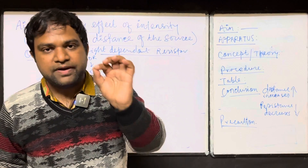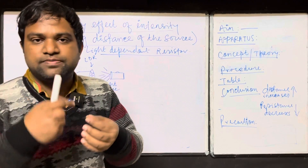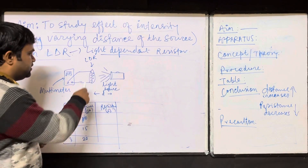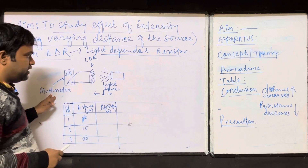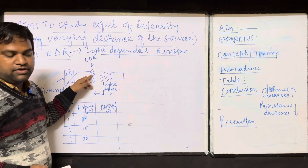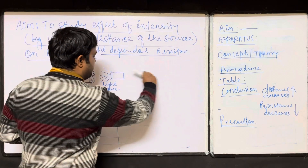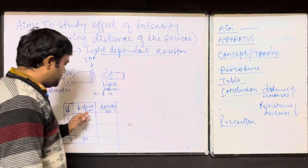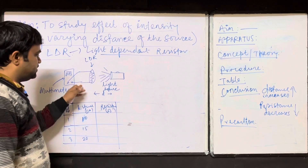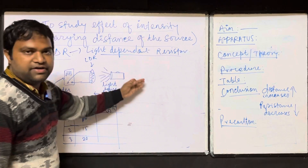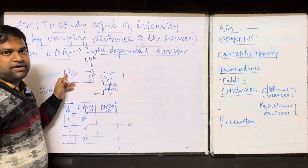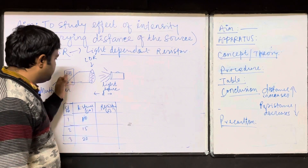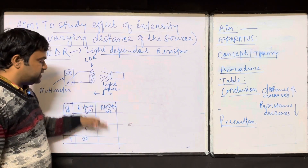This LDR — light dependent resistance — the resistance value will change. We will connect the LDR to a multimeter, and here we will put some light source on it. We will move the light source away and measure the distance. We will write in tabular form: distance 10 cm, 15 cm, 20 cm — 3 different distances — and see what readings appear on the multimeter. We will keep the knob towards ohm to measure the resistance.